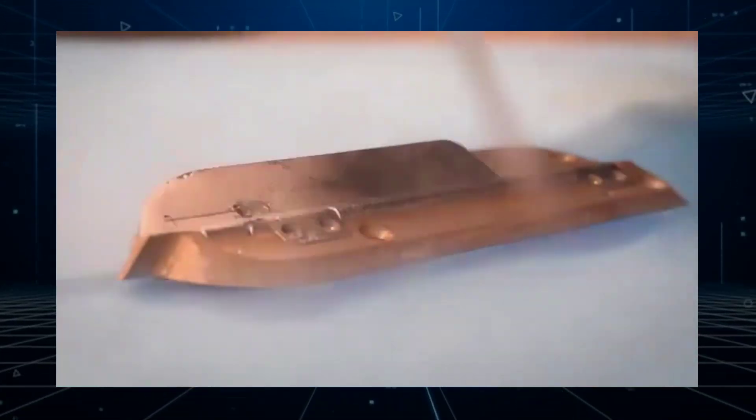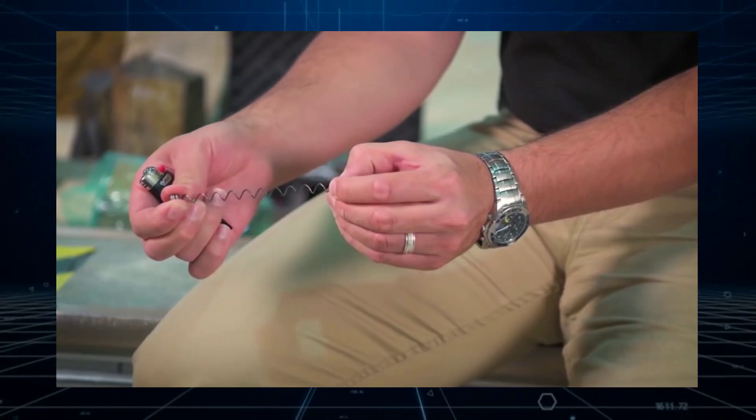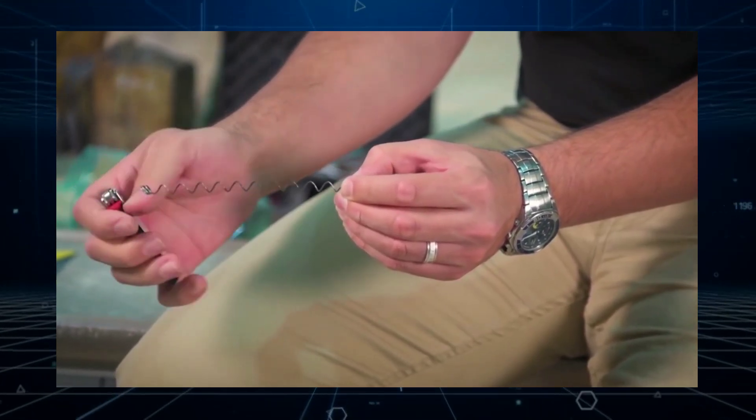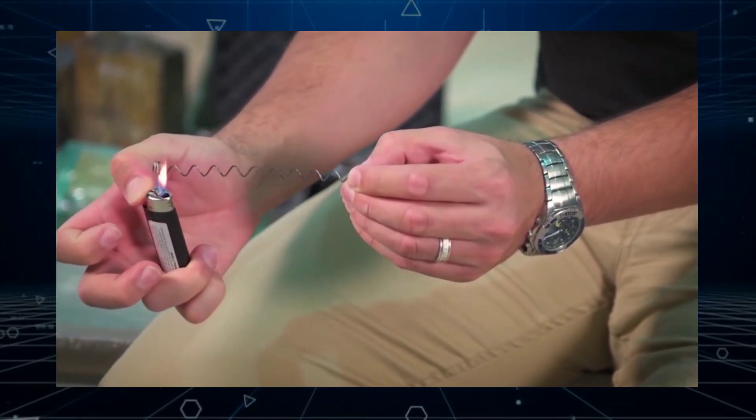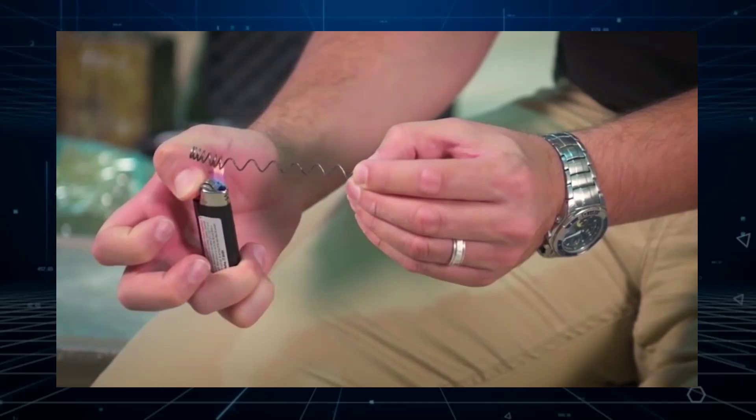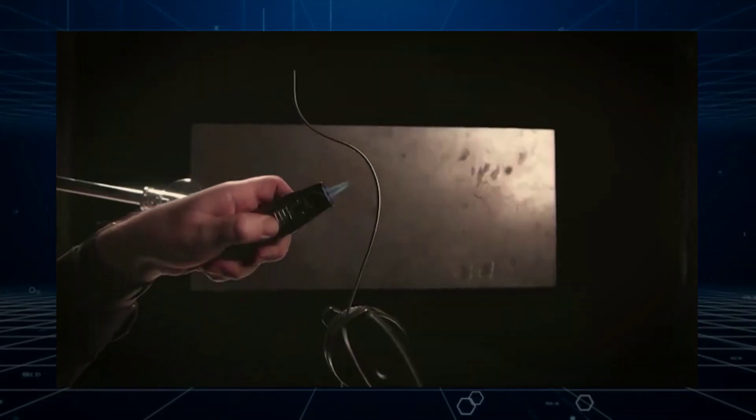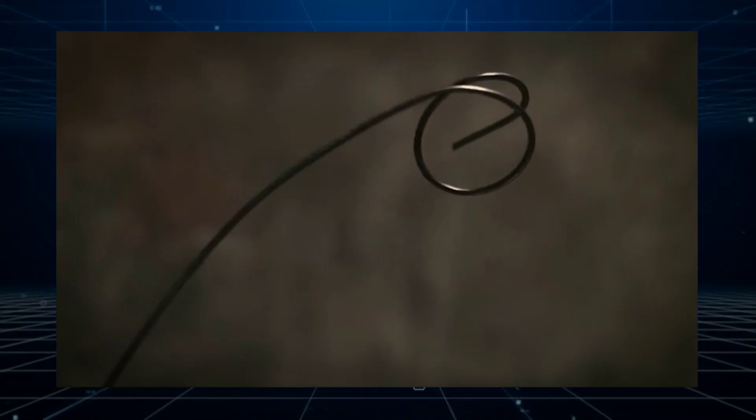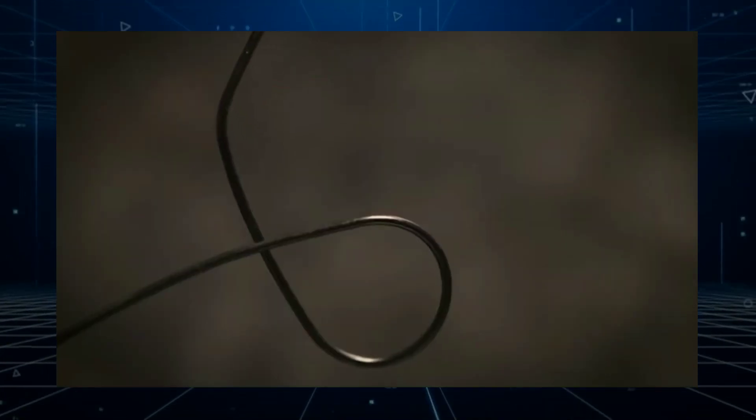A memory metal engineer specializes in developing and working with materials known as shape memory alloys, or SMAs. These materials have the ability to return to a predefined shape when exposed to a specific temperature. Here's a more detailed look at the role and responsibilities of a memory metal engineer.